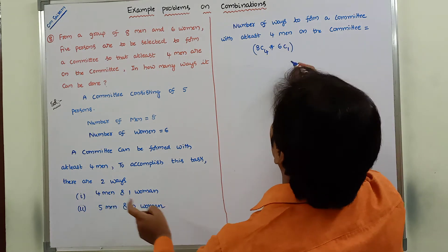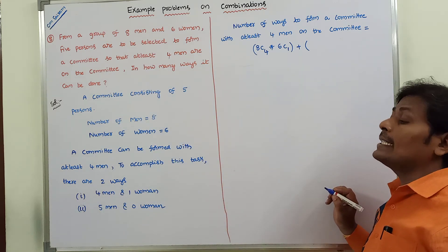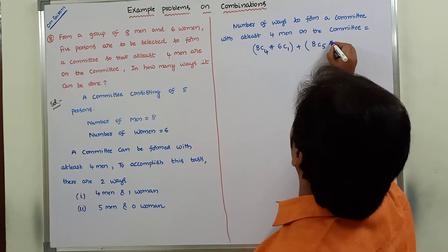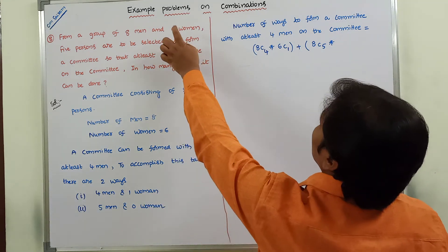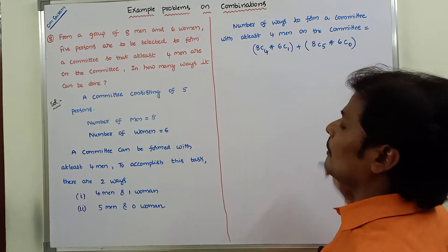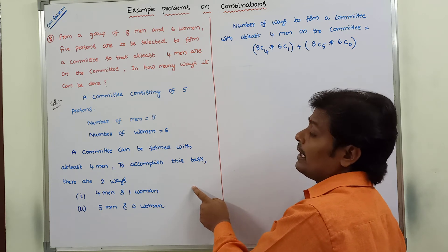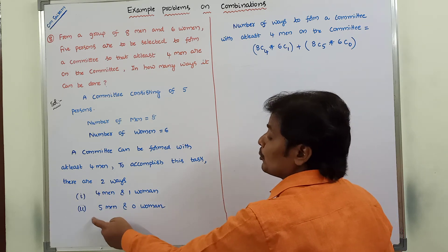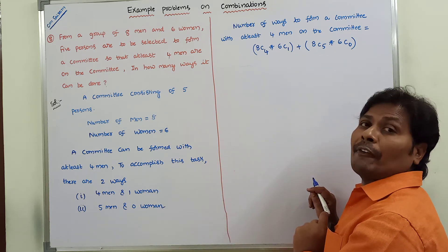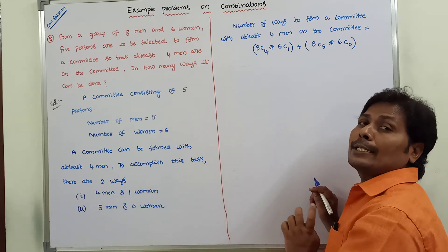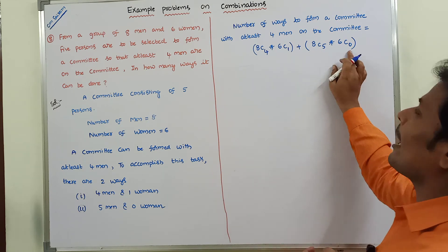This gives the first case as 8C4 × 6C1. Plus, for the second case, five men are selected from eight men, which gives 8C5 ways. Zero women are selected from six women, which is 6C0. So the total number of ways equals 8C4 × 6C1 + 8C5 × 6C0.